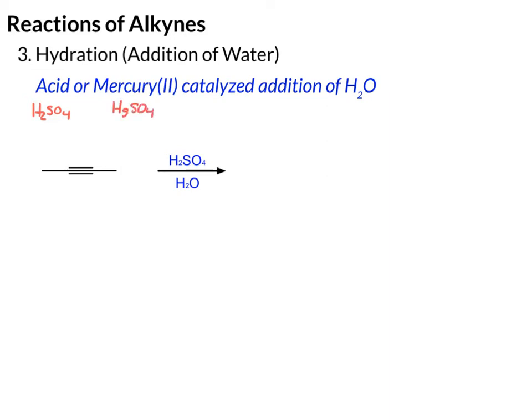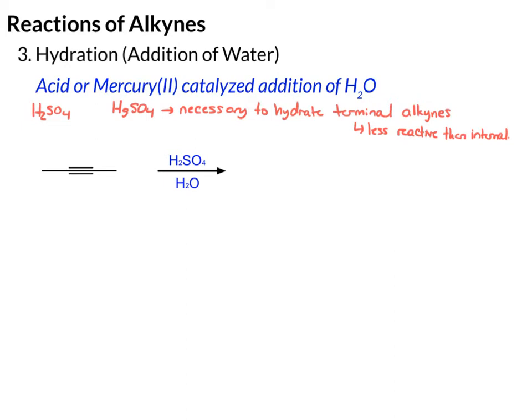We use H₂SO₄. This particular catalyst is needed to hydrate terminal alkynes, which are even less reactive than internal alkynes. So in this example, we have an internal alkyne, so all we need is sulfuric acid and water, and we're going to add water — H and OH — across the triple bond.